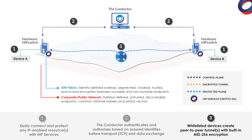A couple of things that are important to note: no traffic passes through the conductor — it merely defines policy for HIP services. It can go offline and all HIP services will continue to function as normal. And with HIP services, they can protect devices in a one-to-one or one-to-many deployment, depending on throughput.